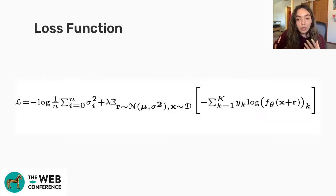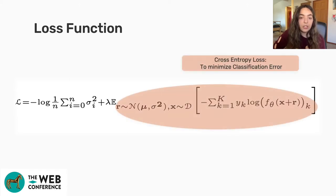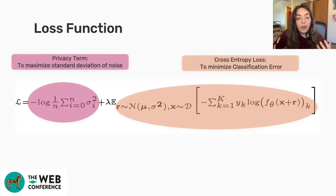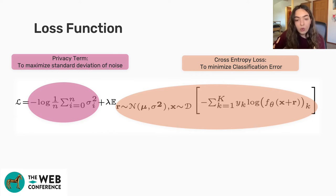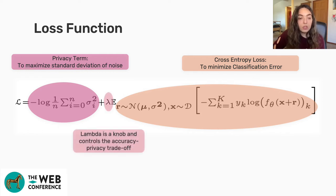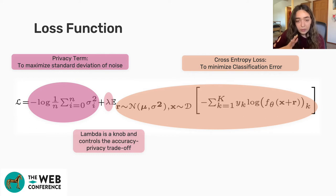The loss function has two main terms. The first is the cross-entropy loss, which minimizes classification error to ensure accuracy doesn't drop too much. The second is a privacy term that maximizes the standard deviation of noise by summing the variance and trying to increase it. We also have a knob lambda that controls the privacy-accuracy trade-off: increasing lambda yields higher accuracy, while decreasing it provides more privacy.